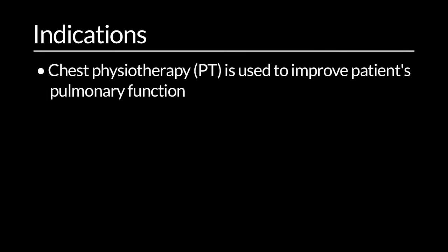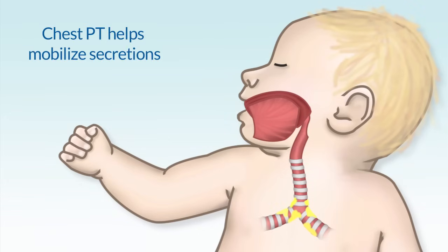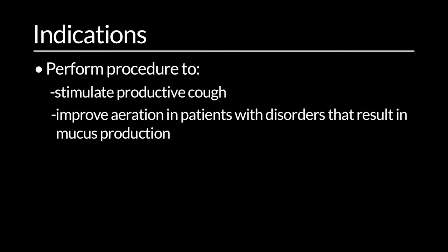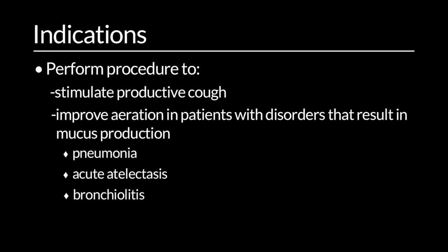Chest physiotherapy is used to help improve a patient's pulmonary function, including gas exchange and lung compliance. This is accomplished through mobilizing secretions which are present in the artificial airways and/or lungs of a critically ill child. You would want to perform this procedure to stimulate a productive cough and improve aeration in patients with disorders that result in mucus production. These disorders include, but are not limited to, pneumonia, acute atelectasis, bronchiolitis, and cystic fibrosis.